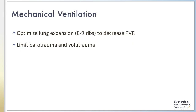An important consideration to improve oxygen delivery to the pulmonary vasculature is the appropriate use of mechanical ventilation. Optimal lung recruitment to 8 to 9 ribs on the inspiratory chest X-ray using PEEP or mean airway pressure will help to decrease PVR and improve the QP/QS ratio. Ventilation strategies aimed at limiting barotrauma and volutrauma should be employed. Conventional mechanical ventilation, high-frequency oscillatory ventilation, and high-frequency jet ventilation can all be used, with considerable institutional variation. The underlying cause of PPHN should also be considered when selecting a ventilatory strategy.